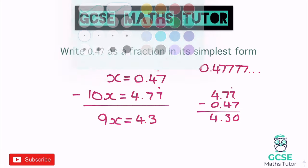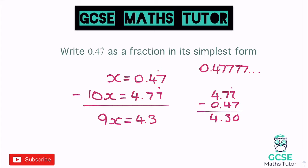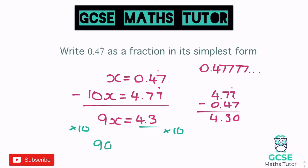One recurring decimal — multiply by 10, then take them away from each other. We end up with a decimal on the right-hand side: 4.3. We shouldn't really have decimals in a fraction, so before turning it into a fraction I'm going to multiply both sides by 10. Once we've done that, we get 90x equals 43.